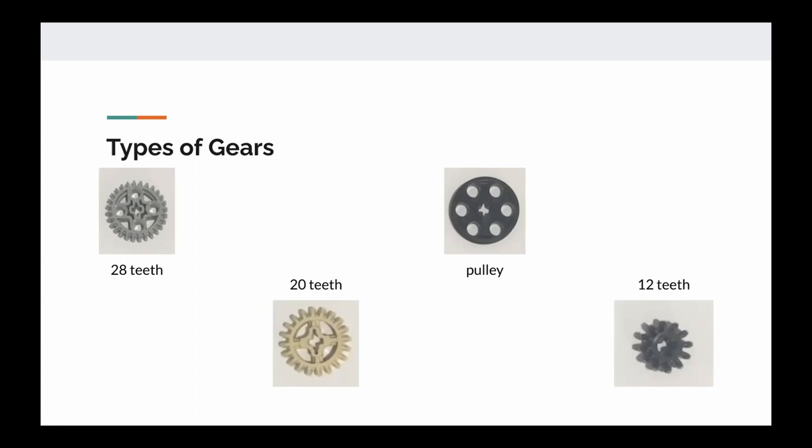Another important distinction that needs to be made between gears with teeth and pulleys is that pulleys preserve the direction of movement. So if the motor is moving clockwise, then the second gear in the pulley system is also going to move clockwise.